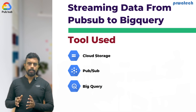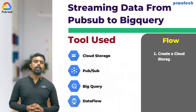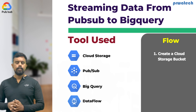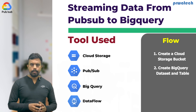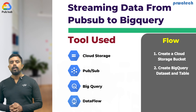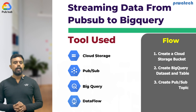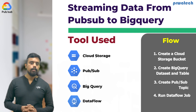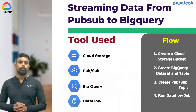The flow is very simple. First, we will create a Cloud Storage bucket with a temp directory. Second, we create a dataset and table inside BigQuery. Third, we go to PubSub and create a topic and subscription. Finally, we go to Dataflow and create a template, filling in all the required parameters to stream data from PubSub to BigQuery.